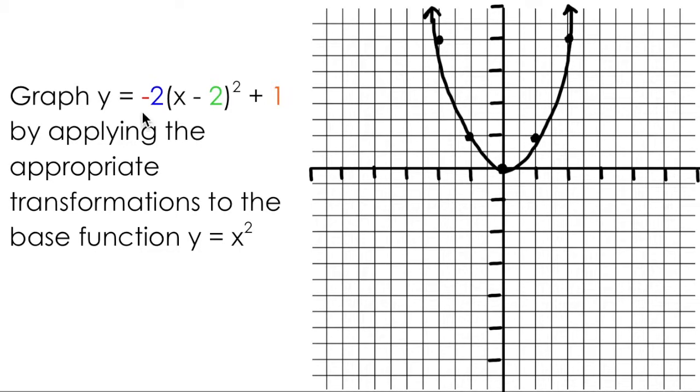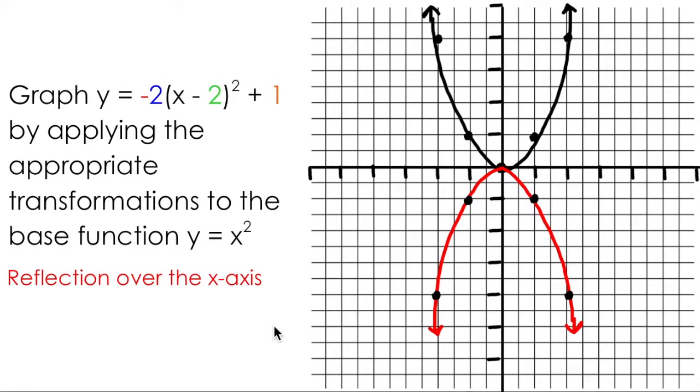In order to transform this parabola, I'm going to apply the transformations that I see in this equation from left to right. This red negative in front of the two suggests that I have a reflection over the x-axis. I can take all of my y values of my base graph and multiply them by negative 1 to reflect them over the x-axis. The x values will stay the same, but all of the y values will become negative. You can see the reflected graph shown in red.